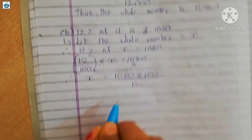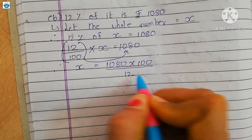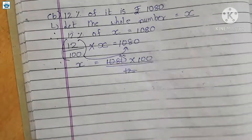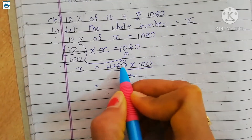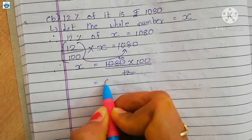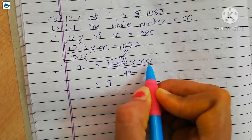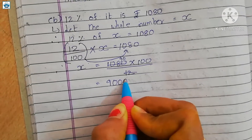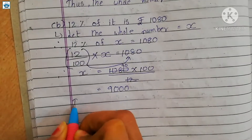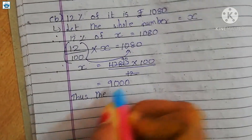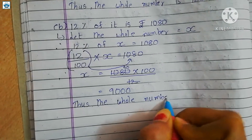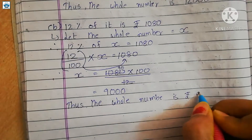So this is our final step. We cross: 12 nines are 108, and we add zero to get 90 into 100. Counting zeros: 1, 2, and 3 — add three zeros — 1, 2, and 3. So that means we get x value 9000. In the last we write down: thus the whole number is rupees 9000.